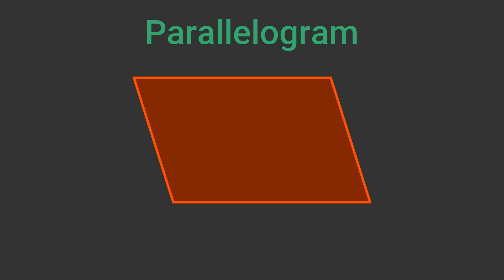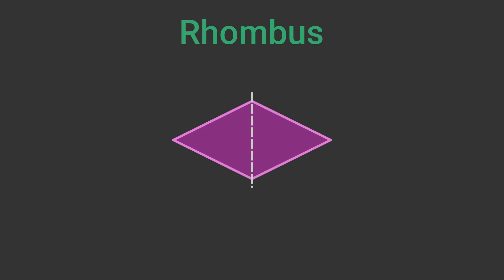A parallelogram has no lines of symmetry. A rhombus is a parallelogram in which all four sides are equal. It has two lines of symmetry, one along each diagonal.